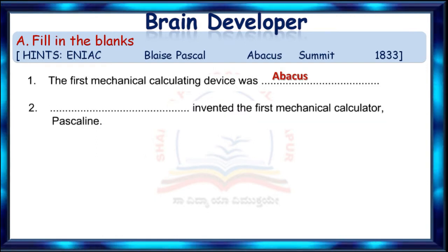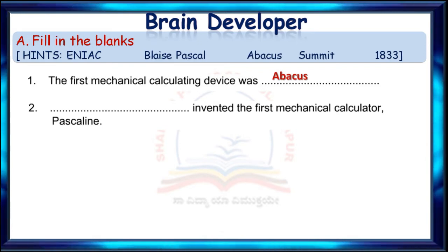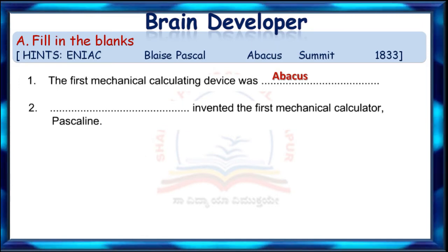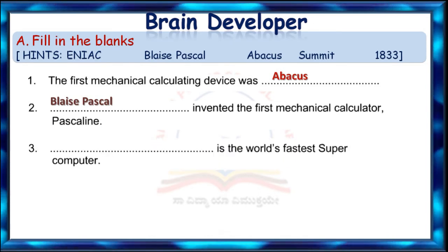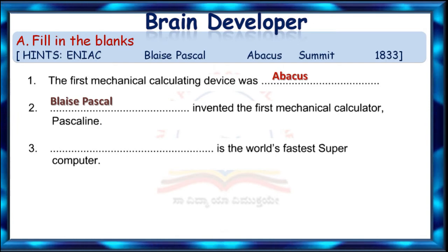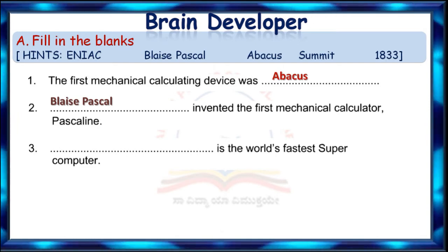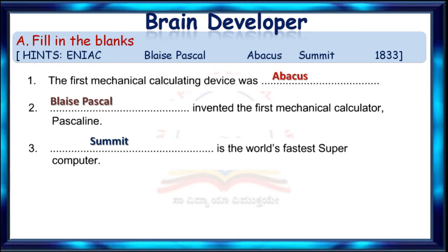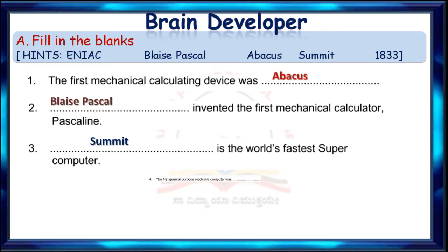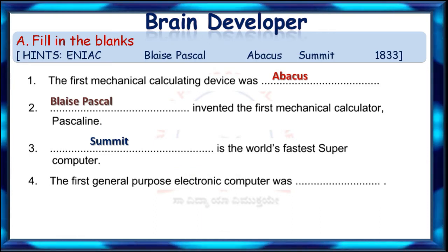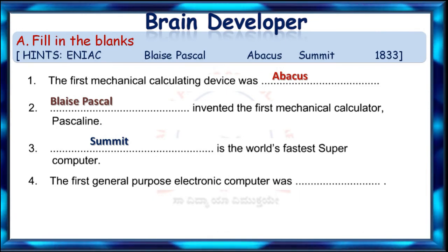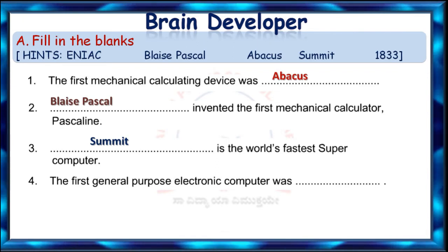Question 2: Blank invented the first mechanical calculator, Pascaline. Children, can you tell me the answer? Yes, it is Blaise Pascal. Question 3: Blank is the world's fastest supercomputer. Children, got the answer? Yes, Summit is the world's fastest supercomputer. Question 4: The first general purpose electronic computer was blank. Children, can you tell me the answer? Yes, it is ENIAC.